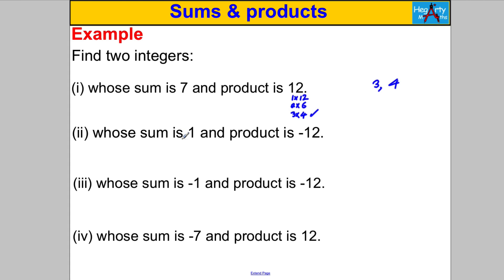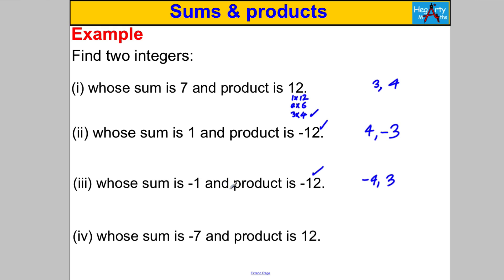What about a sum of 1 and a product of negative 12? The numbers that multiply to negative 12 are like those for positive 12, except one of them has to be negative. I need a combination that sums to 1 with one negative and one positive. Positive 4 and negative 3 works: positive 4 multiplied by negative 3 is negative 12, and positive 4 add negative 3 is positive 1. For sum of negative 1 and product of negative 12: negative 4 and positive 3. Negative 4 times 3 is negative 12, and negative 4 add 3 is negative 1.